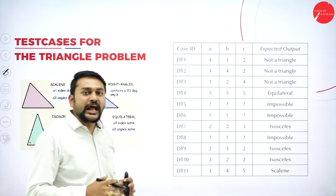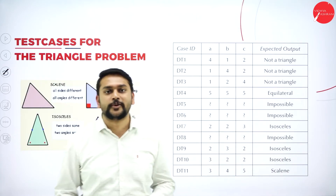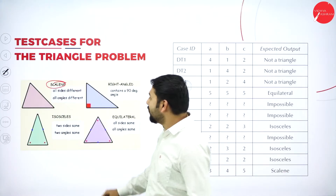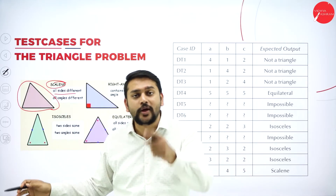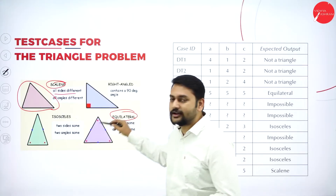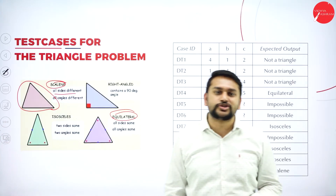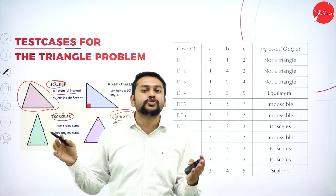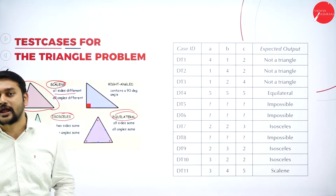Moving forward to the test cases for the triangle problem, let's first review the different types of triangles. A scalene triangle has all sides different. An equilateral triangle has all sides equal. And an isosceles triangle has exactly two sides equal.